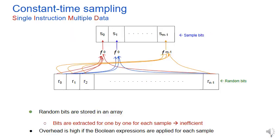But if we store the random bits in an array and use them to generate each sample, the overhead for unpacking the bits and calculating the boolean expressions become too high. Here we of course get a constant time sampler, but the performance is very poor.